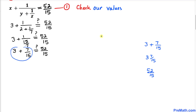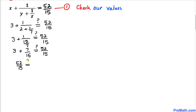Now let's focus on the left hand side. We have 3 as a whole number and 7 over 15 as a fraction. Merging them as a mixed number gives us 52 divided by 15. So the left hand side is 52 divided by 15, and the right hand side is also 52 divided by 15. This is a true statement, confirming that x equals 3, y equals 2, and z equals 7 are valid values.